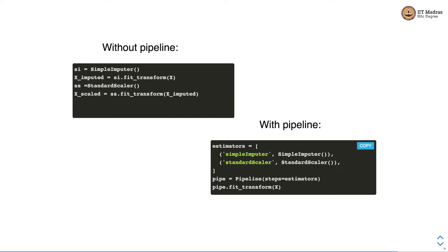The final step is standard scalar, so the pipeline object exposes the fit_transform method of the final estimator. We call pipe.fit_transform by passing the feature matrix as an argument. It first applies the simple imputer and then the standard scalar transformation to the original feature matrix, returning a transformed feature matrix with both transformations applied.